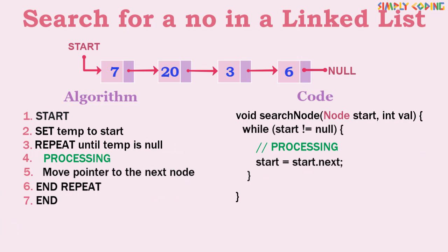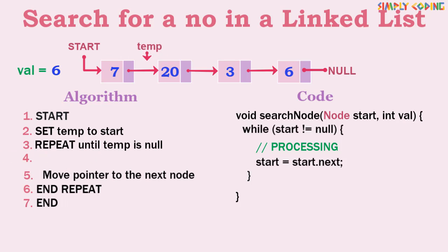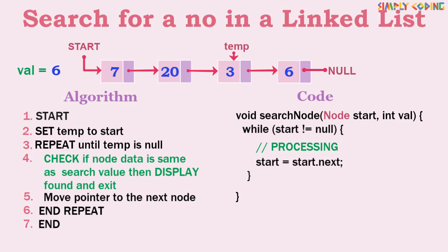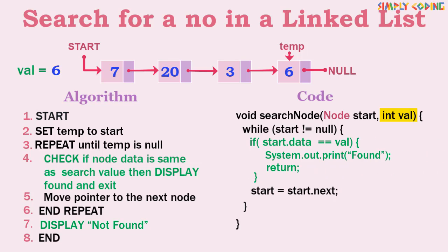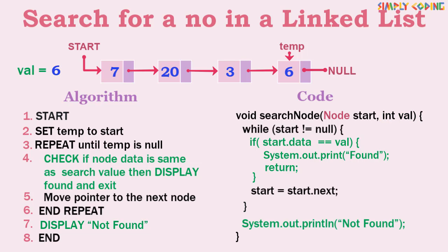The next program is to search for an element in a linked list. We have a number which we need to search for, so in the traversal we check if the number matches the node. If yes, we display found and exit. If we finish traversal without finding it, we display node not found. In code, we pass another variable val which we need to search. In the traversal we check if any node data equals val — if yes, we print found and return; otherwise we print value not found.